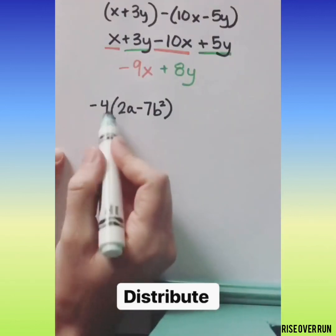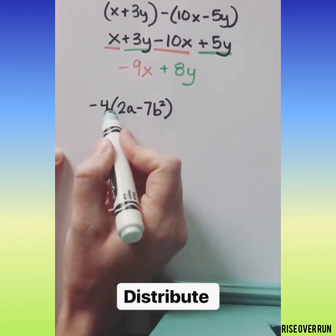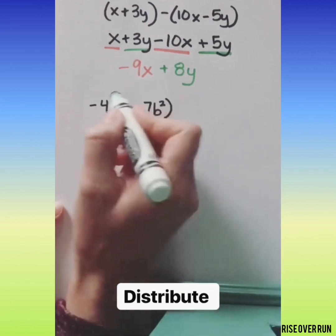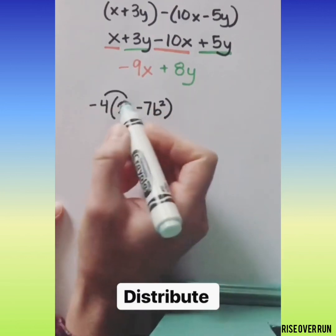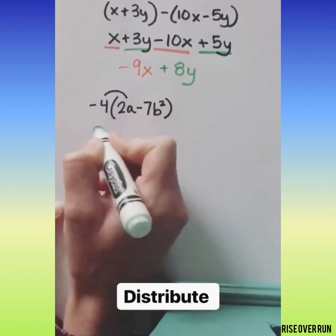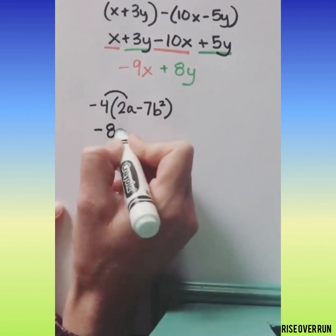If you have a number outside the parentheses, that means it's multiplying everything in here. So we need to distribute it. Negative 4 times 2a will multiply the coefficient times negative 4, negative 8a.